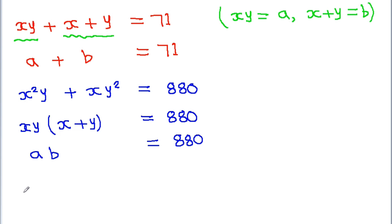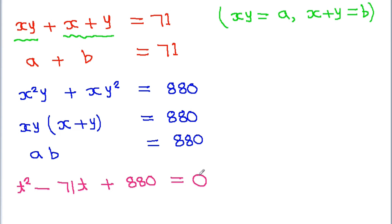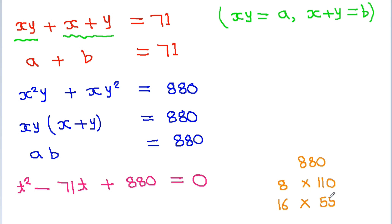Now we have a plus b is equal to 71 and a times b is equal to 880. So the quadratic equation will be t squared minus 71t plus 880 is equal to 0. We need to factor this equation. 880 can be written as 16 into 55, and 16 plus 55 is 71, which equals our required sum.